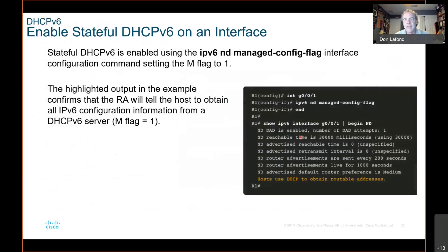To set it — go to the interface. It's really super easy. IPv6 nd managed-config-flag. Remember the ND, and don't type 'neighbor discovery' — it won't work. It's 'nd' space 'managed-config-flag'. Then do that same show command: show IPv6 interface G0/0/1, look at the interface to see what flags are set and begin with neighbor discovery.